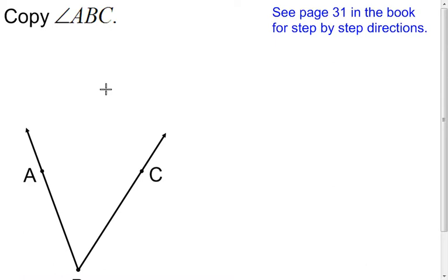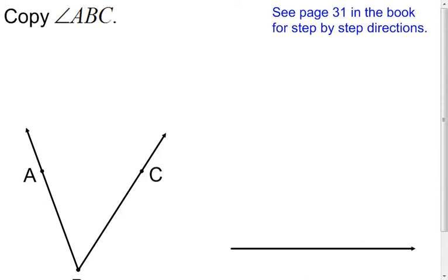My next one is copying an angle. I recommend starting off by making one of the rays of your angle, because your new angle has to have two rays. For the first step, just make one of them — it doesn't matter where or how you put it, just make a ray.